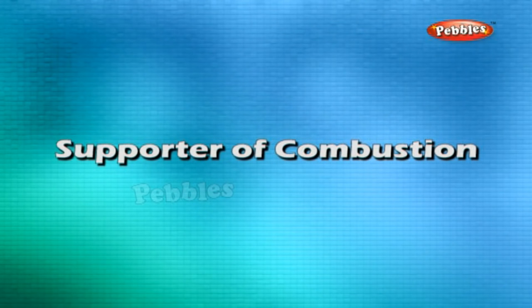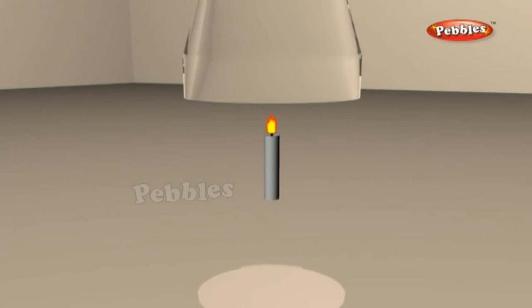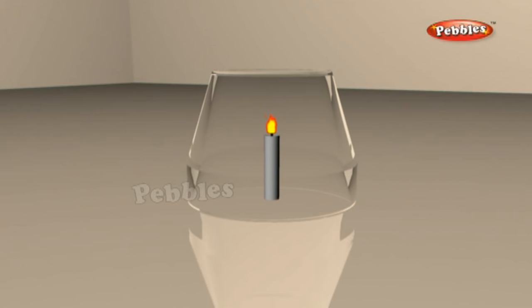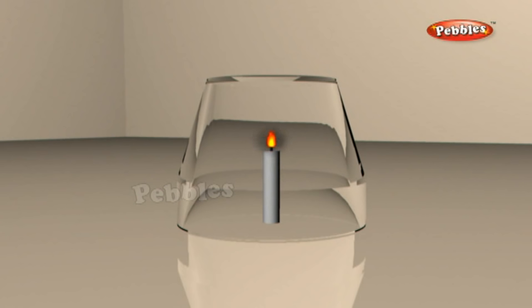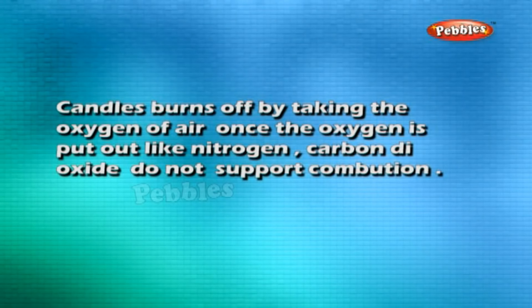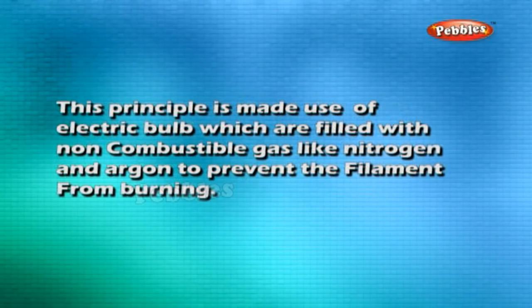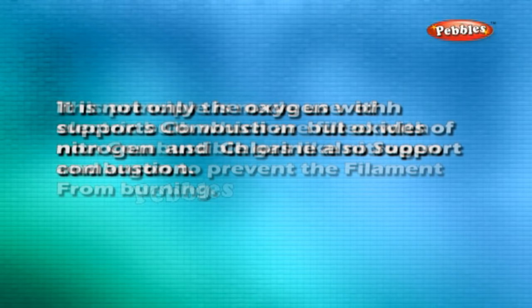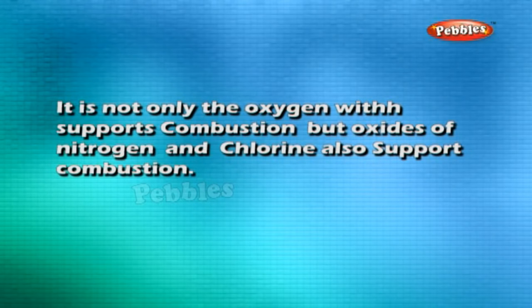Supporter of combustion: light a candle and invert a glass tumbler over it. What happens? It burns for a little while and then is put out. The candle burns by taking the oxygen from air; once the oxygen is over, it is put out, as the remaining gases like nitrogen and carbon dioxide do not support combustion. This principle is made use of in electric bulbs, which are filled with non-combustible gases like nitrogen and argon to prevent the filament from burning. It is not only oxygen which supports combustion — oxides of nitrogen and chlorine also support combustion.